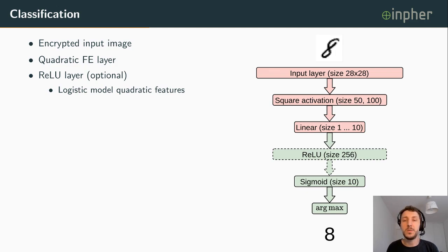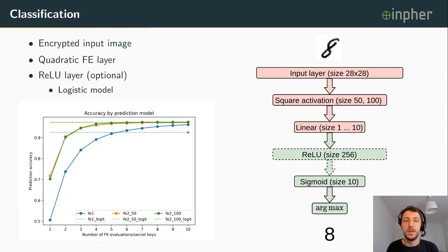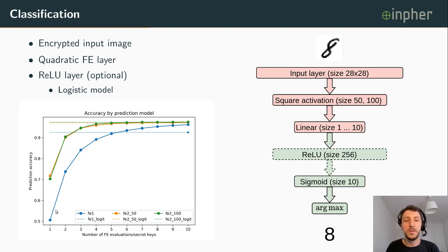Regarding classification accuracy: in the plot, the x-axis shows the number of functional encryption evaluations and the y-axis shows prediction accuracy. Quadratic functional encryption always outperforms linear functional encryption. Notably, using only three quadratic functional encryption evaluations achieves almost the same prediction accuracy as using seven or eight linear functional encryption evaluations.